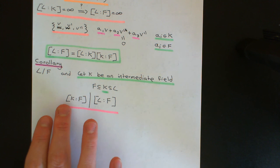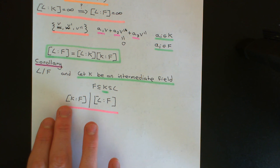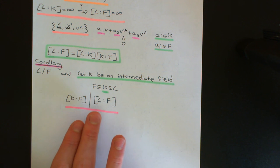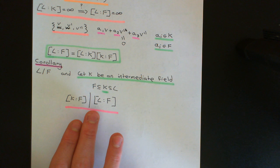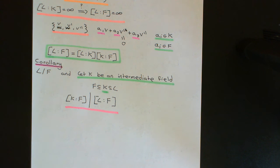Here it's the degree of the intermediate field that divides the degree of the larger field. And we'll end this video on the Tower Law there. Thank you.